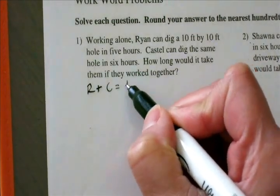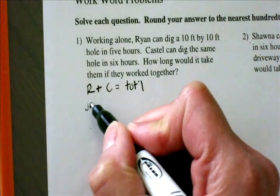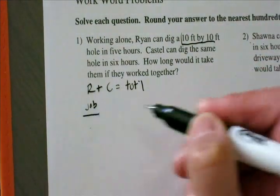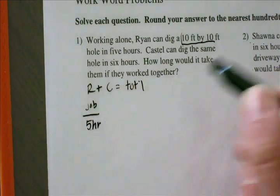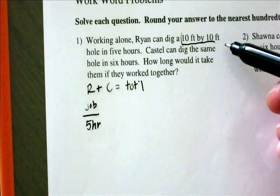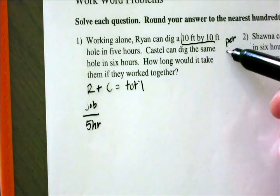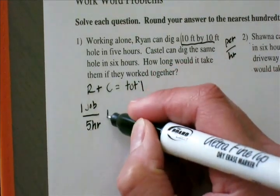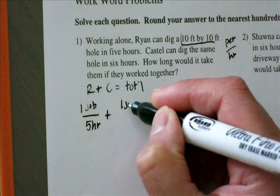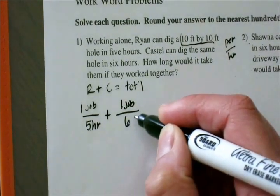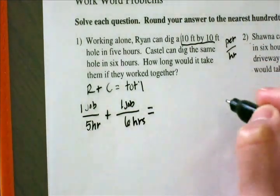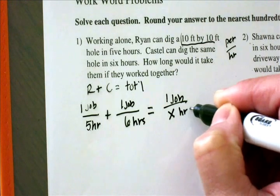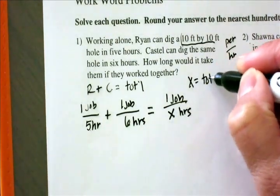Ryan plus Castell equals total time. I'm defining my job as a 10 foot by 10 foot hole. Ryan can dig that hole in 5 hours. Since the rate of work is per hour — whenever you have 'per' it means divide — so that's why I'm writing it as 1 job over 5 hours, plus Castell who can do 1 job in 6 hours. How long would it take them if they worked together? So 1 job over x hours, where x is the total time together.